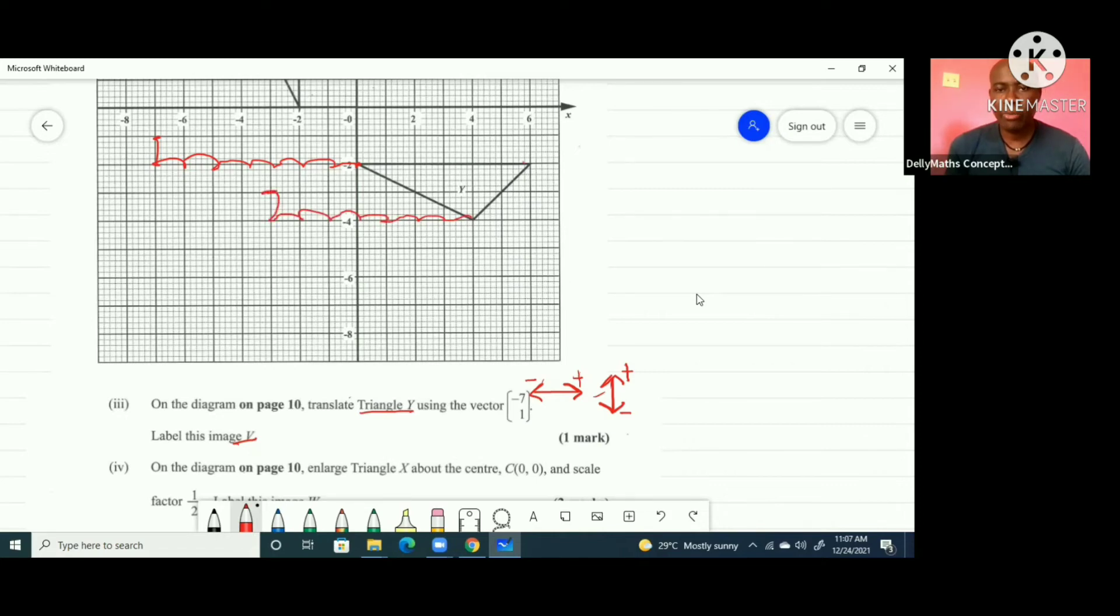This point here, we're going to move 1, 2, 3, 4, 5, 6, 7, and then go up. That point landed right there. So we're going to recreate the shape. Let me use another marker. I'm not using a straight line, please bear with me, but we label it V. So basically, we translated that - we shift it 7 units to the left and then push it up by one unit, and we get this shape.